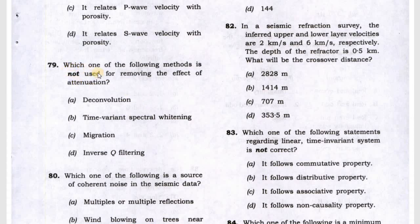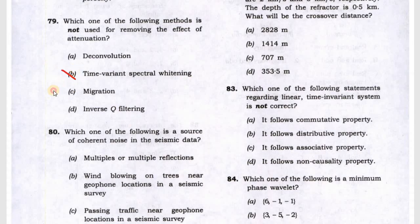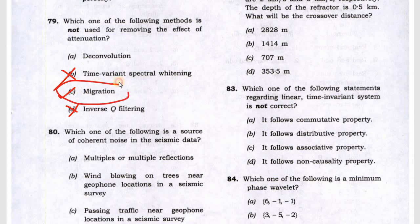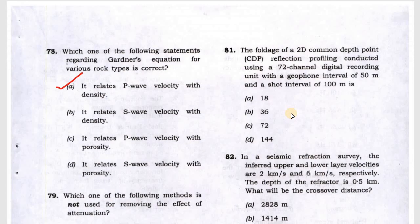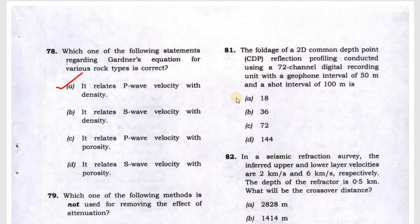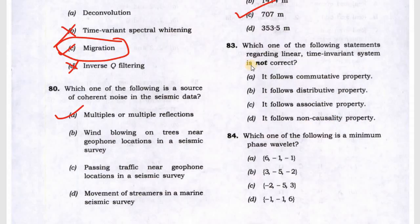Next is the Gardner equation. It relates P wave velocity with density, answer is A, 78A. Question 79 asks which is not used in removing magnetic attenuation. B and C cannot be answered. Deconvolution can be migration. Most probably it is migration, because NMO correction is also migration. NMO correction is not anything about attenuation. Next question 80, answer is A, multiples. What is coherent noise in seismic data?